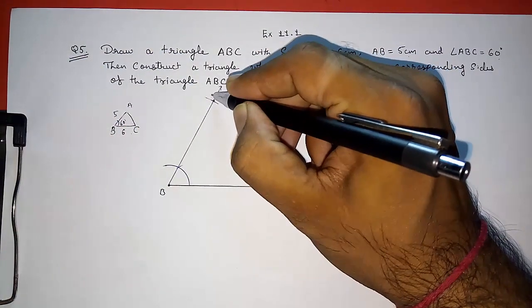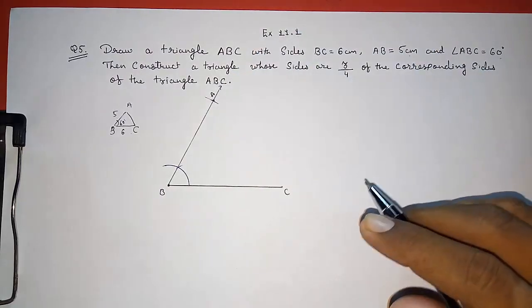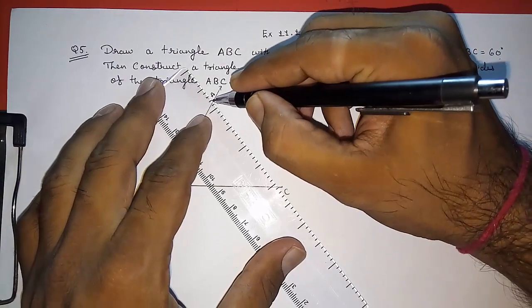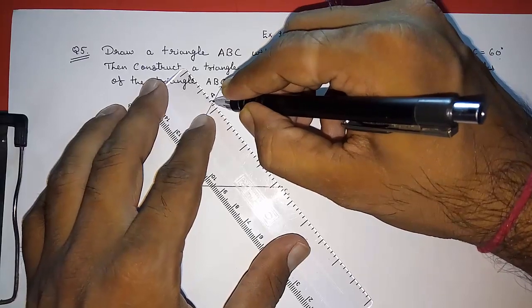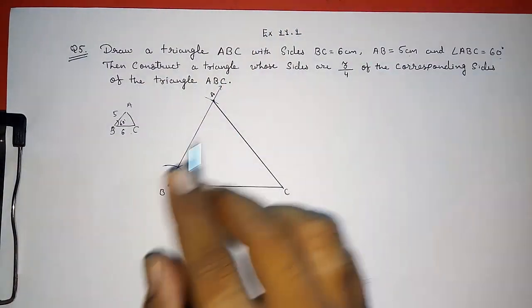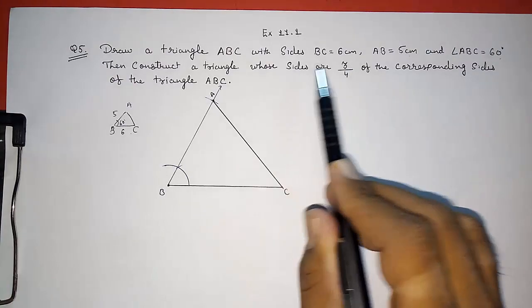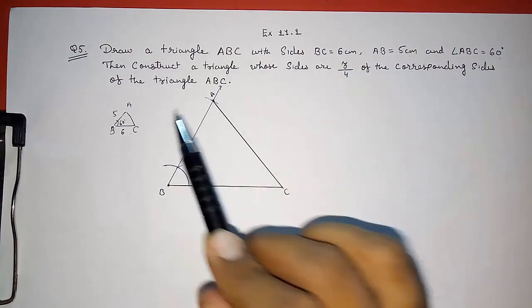So give this point name A. Now join A to C. So this is our given triangle ABC. Now we have to construct another triangle that is 3 by 4 of this triangle.